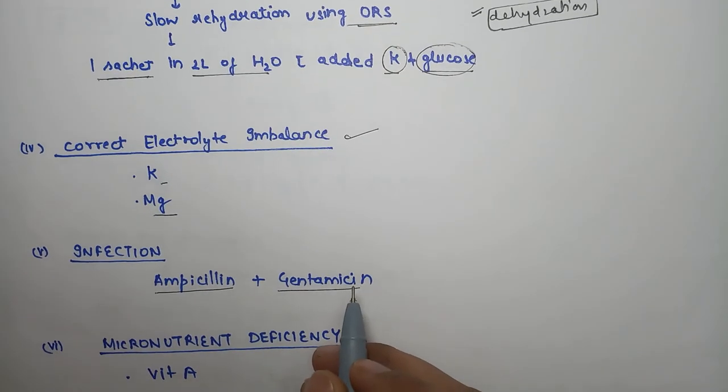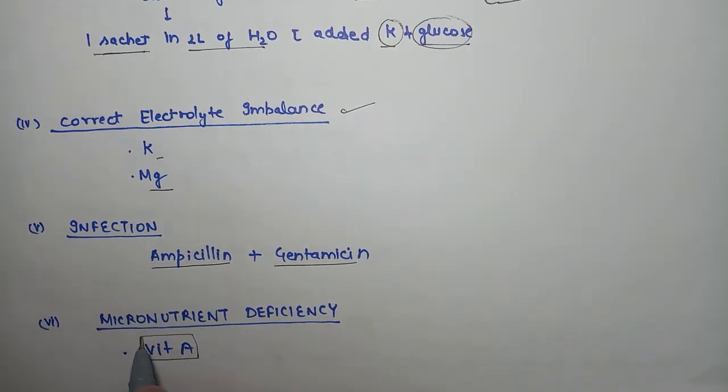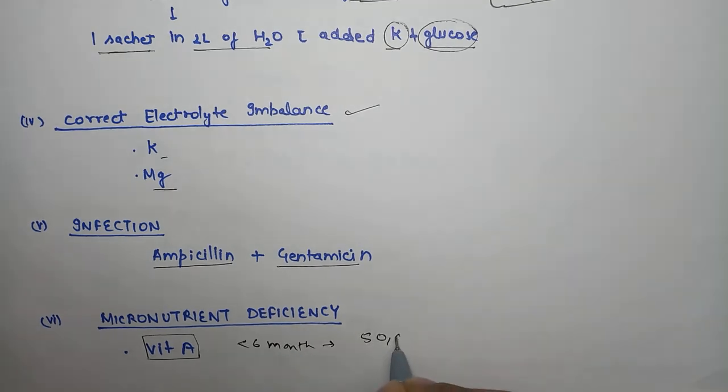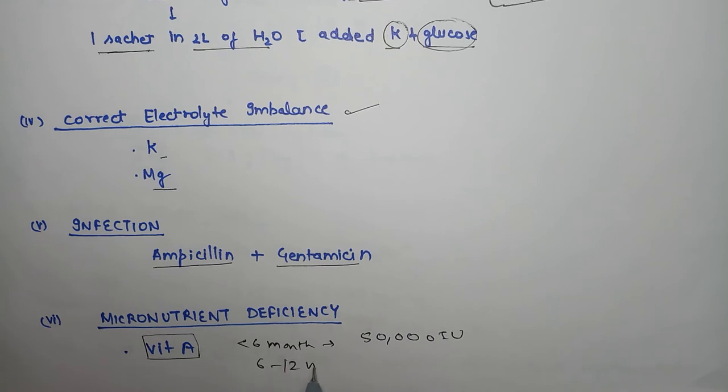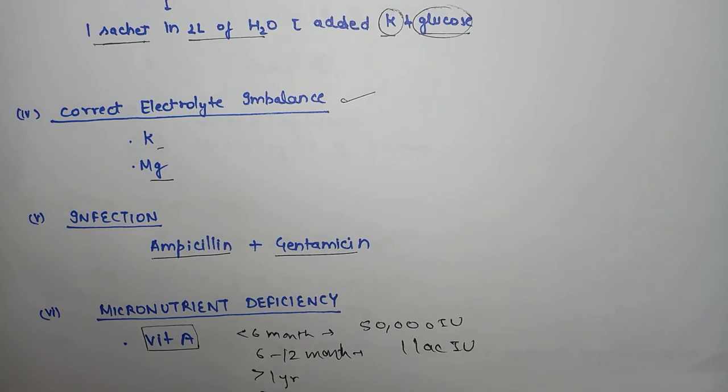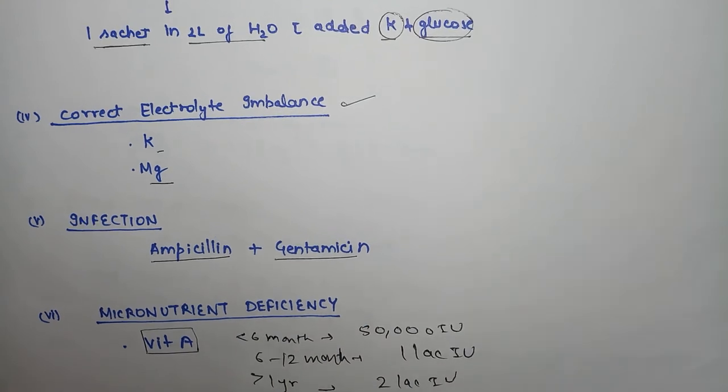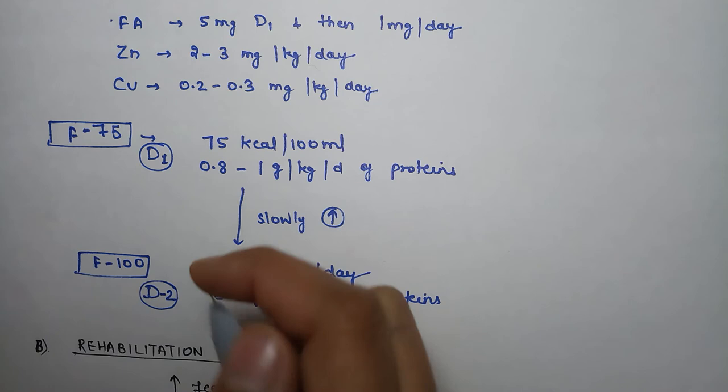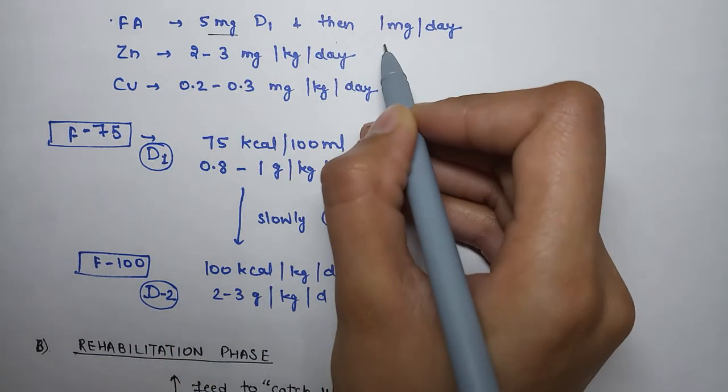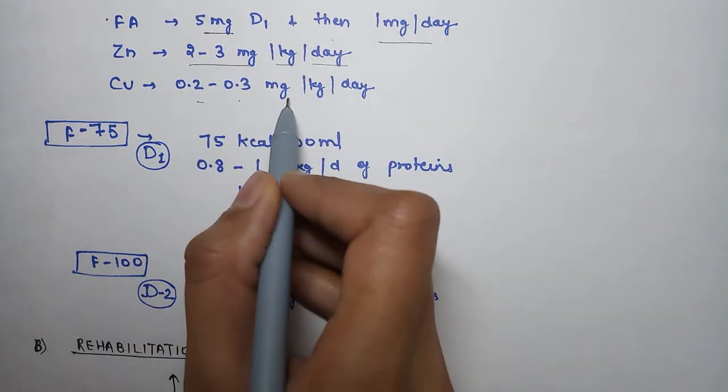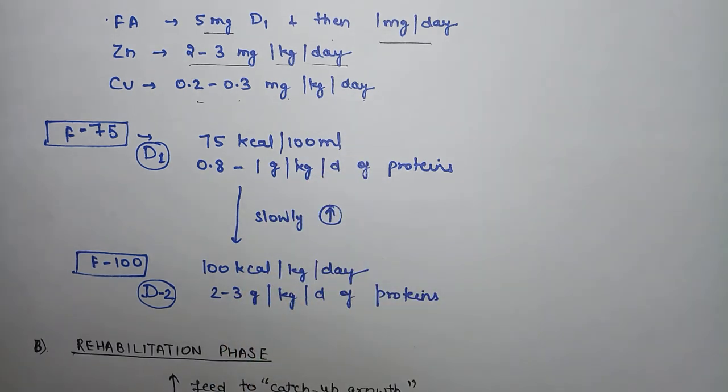For micronutrient deficiency, give vitamin A: 50,000 international units if under 6 months, 1 lakh IU for 6-12 months, and 2 lakh IU if bigger. Also give folic acid 5mg then 1mg per day, zinc 2-3mg per kg per day, and copper 0.2-0.3mg per kg per day.